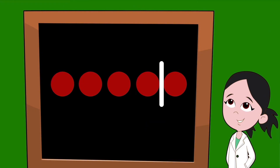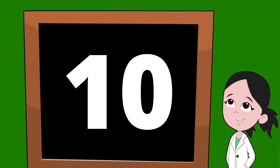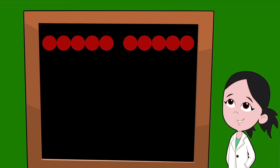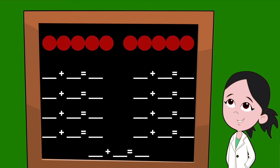Let's get started with the number 10. We're going to go ahead and start with our 10 dots. The number 10 is going to have nine sets of partners. Let's go ahead and split those dots up. We're going to start with just one dot to the left. This means our first partner is going to be the number one. To the right of our line, we have nine dots, so our second partner is the number nine. One plus nine equals 10.